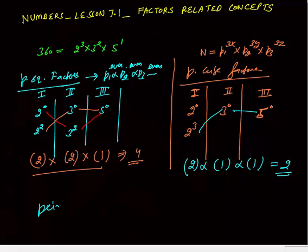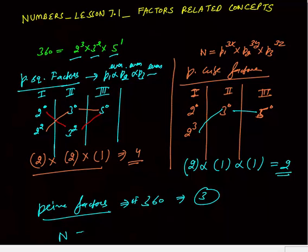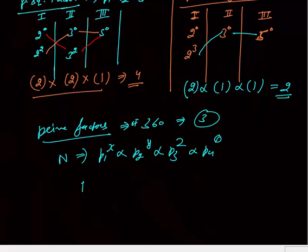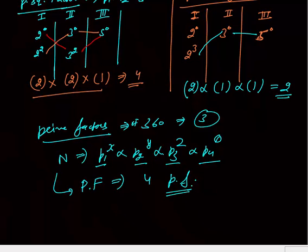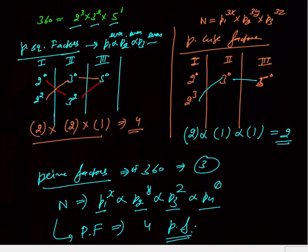Prime factors of 360 are simply 2, 3, and 5 — the three distinct prime numbers in its factorization, so 3 prime factors. In general, if N = P1^x · P2^y · P3^z · P4^θ, then N has 4 prime factors: P1, P2, P3, P4. Prime factors simply means counting how many distinct prime numbers make up the big number.